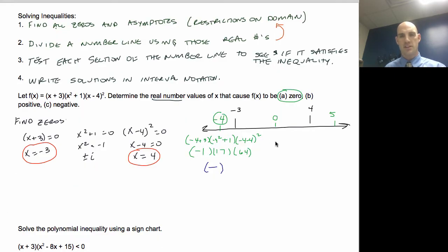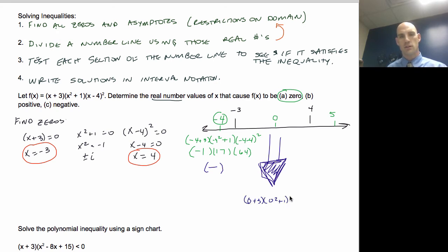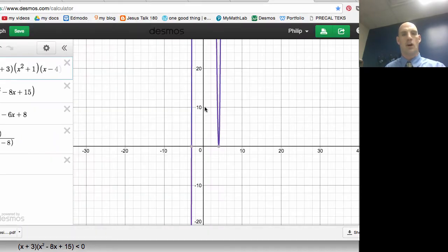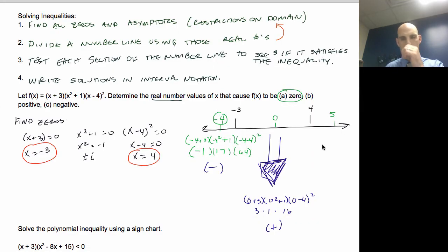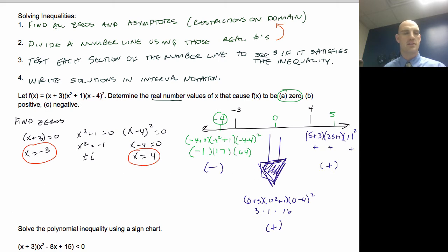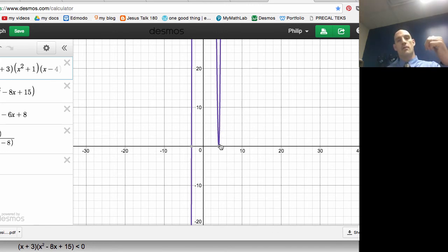That tells me the section from −3 downward is negative — confirmed by the graph. Testing x = 0: (0 + 3)(0² + 1)(0 − 4)² = 3 · 1 · 16, which is positive. Testing x = 5: (5 + 3)(5² + 1)(5 − 4)² — positive times positive times positive — so that section is positive, which my graph confirms.